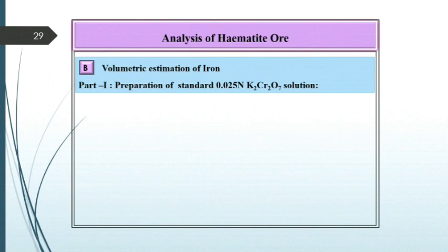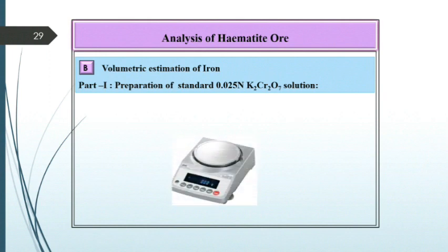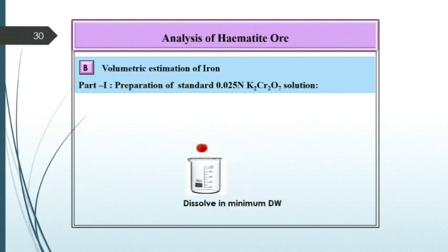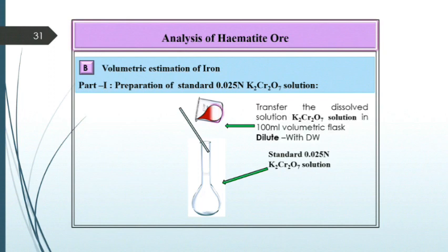In that, there are two parts. Part one is preparation of standard solution of 0.025 normal K2Cr2O7. To prepare the standard solution of 0.025 normal K2Cr2O7, weigh exactly K2Cr2O7 and transfer it in a beaker. Dissolve this K2Cr2O7 in a minimum amount of distilled water and stir it well.